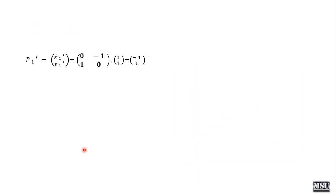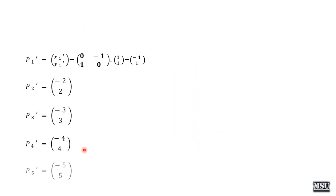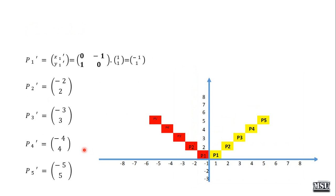Applying the formula to each point: p1 dash = (−1, 1), p2 dash = (−2, 2), p3 dash = (−3, 3), p4 dash = (−4, 4), p5 dash = (−5, 5). Here you can see the original line and the rotated line. Initially the line is placed in one position, and after rotation it is in the new position. The angle between the two positions is 90 degrees — that is what we call rotation.